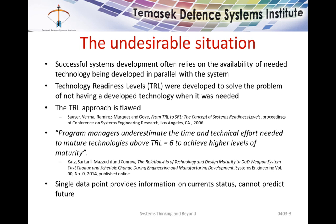The undesirable situation is that successful system development often relies on the availability of needed technology being developed in parallel with a system. We're talking generally about complex systems in defense, aerospace, and transportation, where the technology needed to implement the system doesn't yet exist. We need some level of confidence it will exist when needed. Technology Readiness Levels, TRL, were developed to solve the problem of not having a developed technology when it was needed.